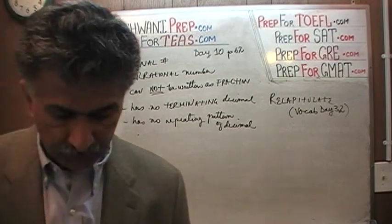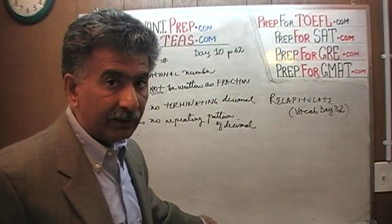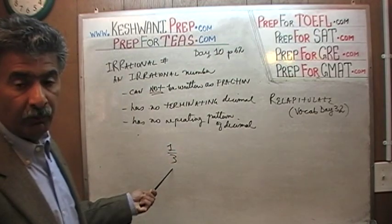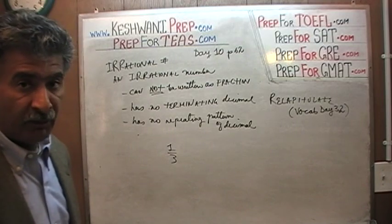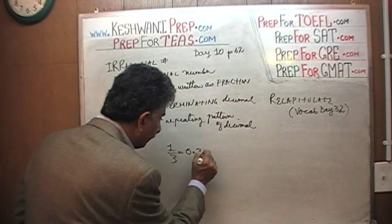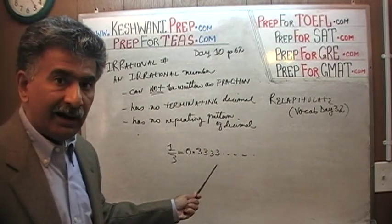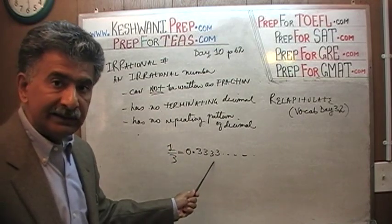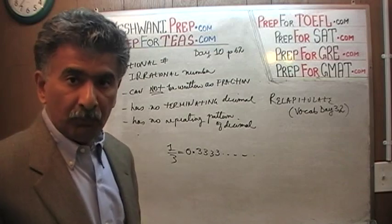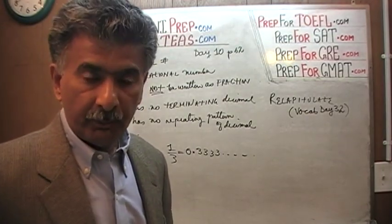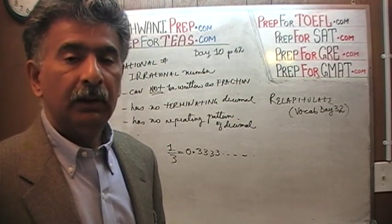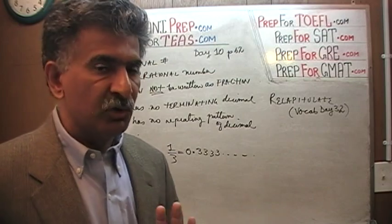Now listen carefully: just because the decimal never ends, that in itself does not make it irrational. Because even though it is non-terminating, there is clearly a pattern. Just because it has a non-terminating decimal doesn't make it irrational, because even though it is non-terminating, there is clearly a pattern — it's just three all the time. So if you have a pattern of .127, .127, .127 forever and ever, that is not an irrational number. That is a rational number because even though it never ends there is a clear pattern. Irrational numbers are just irrational — there is no rhythm or rhyme to it. They never end and you cannot write them as fractions.